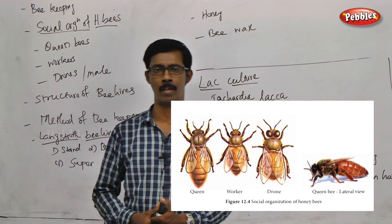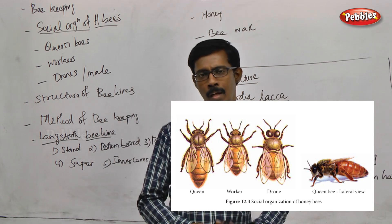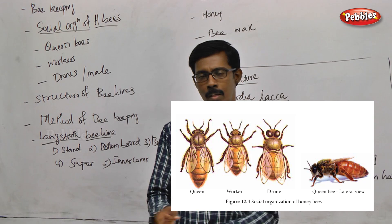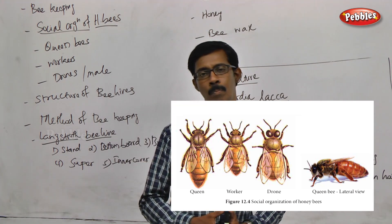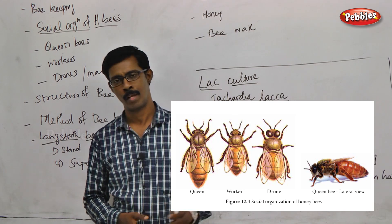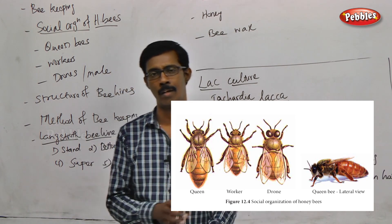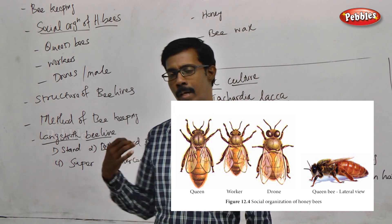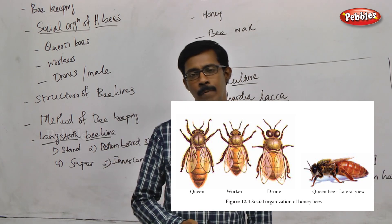When the queen bee is ready to mate, she secretes a pheromone. This pheromone attracts the drone bees, and the drones will follow the queen. The drone bees are the male honeybees.